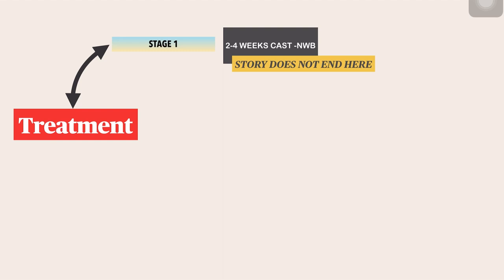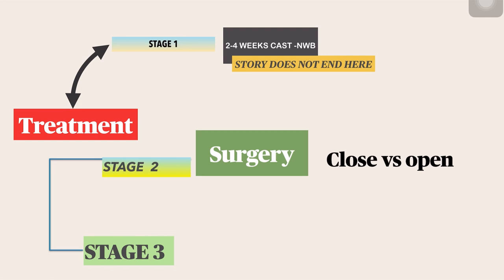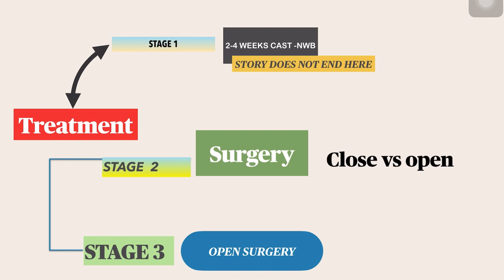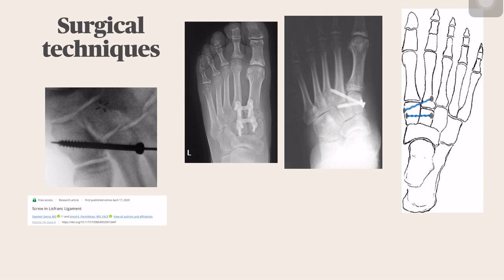In Stage 2, there is a clear-cut injury and surgery is required. The debate is whether to go for closed or open reduction — both exist in literature. Closed reduction avoids disrupting the ligament and surrounding structures; open reduction ensures better joint visualization for healing. In Stage 3, surgery is always required and must be done open. Surgical options include screws, plates, a combination of both, a loop system, and a suture button system.